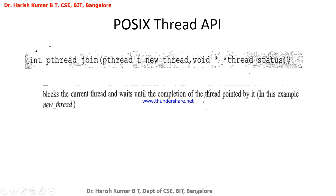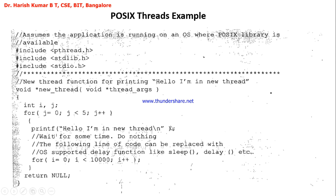Now I have an example. This is the function which should be executed by the newly created thread. I'm including pthread.h, stdlib.h, and stdio.h. The function uses a void star universal pointer as argument. When a new thread is created, I want it to perform this particular function.